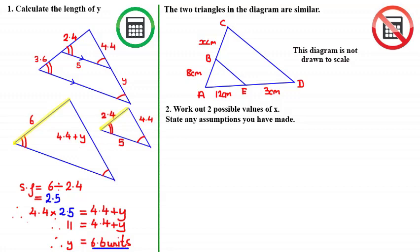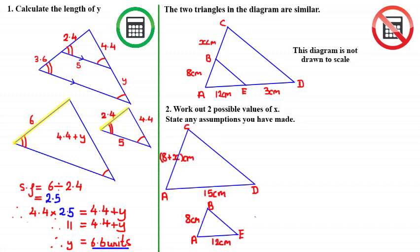So the first thing we'll do is draw both triangles separately to make it clearer. This is the larger triangle where line AC is 8 plus X centimeters and line AD is 12 plus 3, which equals 15 centimeters. And this here is the smaller triangle ABE.